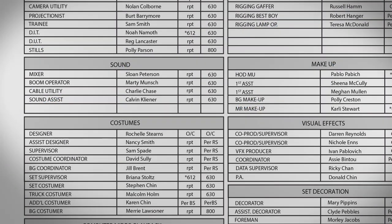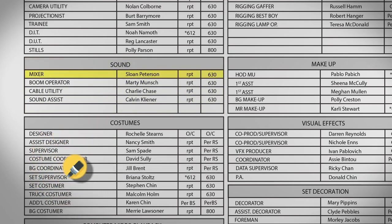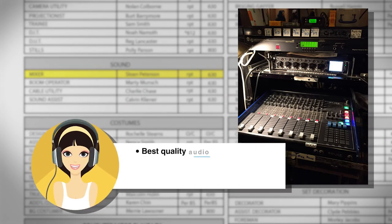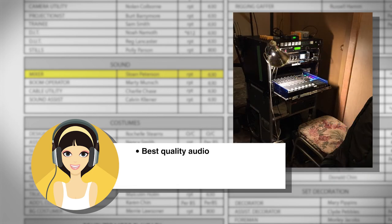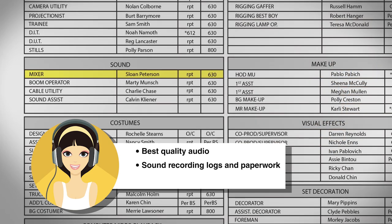The sound department is in charge of recording audio on set such as the actor's dialogue, wild dialogue, ambient outside sound, and room tone. The mixer, or sound mixer, is the head of the sound department on set, responsible for recording all necessary audio in the best quality possible. The mixer generates sound recording logs and other paperwork for the editor, and also supplies headsets to the director, script supervisor, and producers so they can best hear the dialogue while it's recorded.